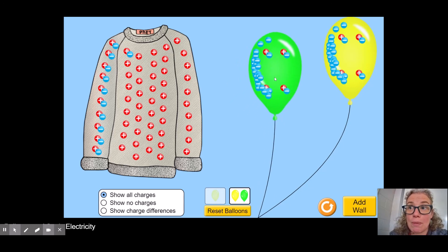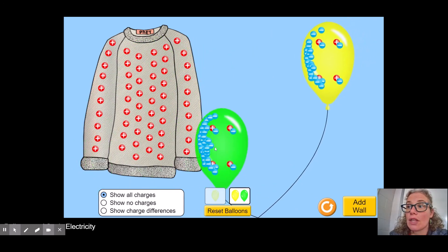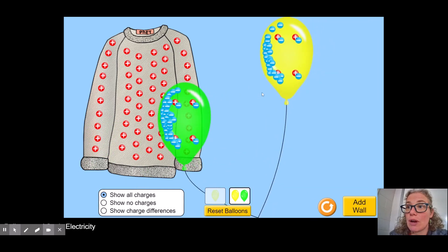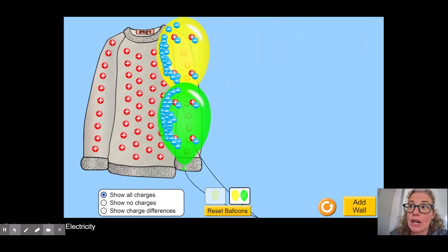Like the two balloons, the balloons will be attracted to the sweater because the balloons have a net negative charge and the sweater has a net positive charge.